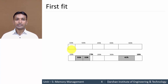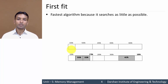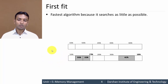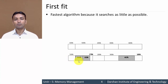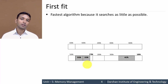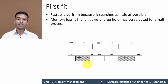The advantage of First Fit is that it is the fastest algorithm because it searches as little as possible. It starts from the beginning of memory and once it finds a partition large enough to hold the process, it stops searching. The disadvantage is that memory loss is higher, because a very large hole may be selected for a smaller process.